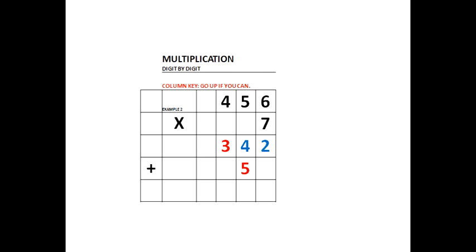7 times 5 is 35. The 3 is in the next column to the left of 5 in the 35, and it goes up as high as it can. 7 times 4 is 28. The 8 is in the column that the 4 is in within 456. The 2 of the 28 is in the next cell to the left, and it moved up one row, so it's in the next column to the left as high as it can go.